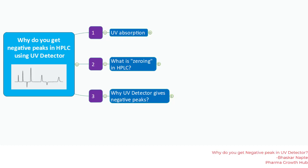Hello and welcome to this video. My name is Bhaskaranapte and today we are going to talk about why you get negative peaks in HPLC using UV detector. One can understand the presence of a negative peak when using a refractive index detector, but negative peaks are not really considered a good chromatographic condition when observed with the UV detector technique. Let us understand the origin of this negative peak — there are three important points we are going to discuss today.